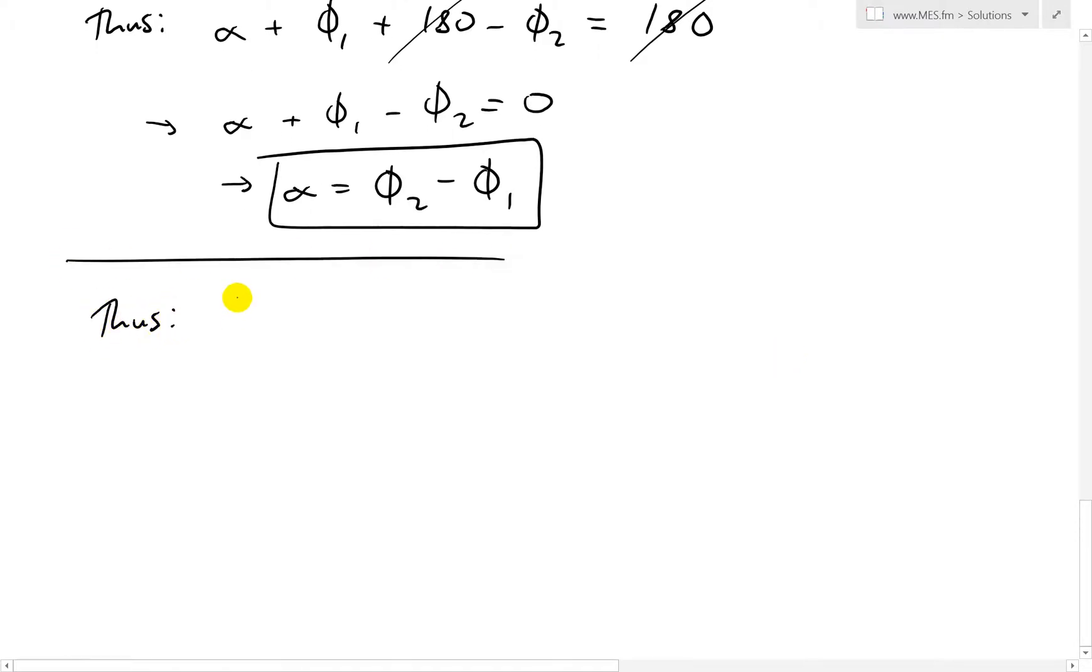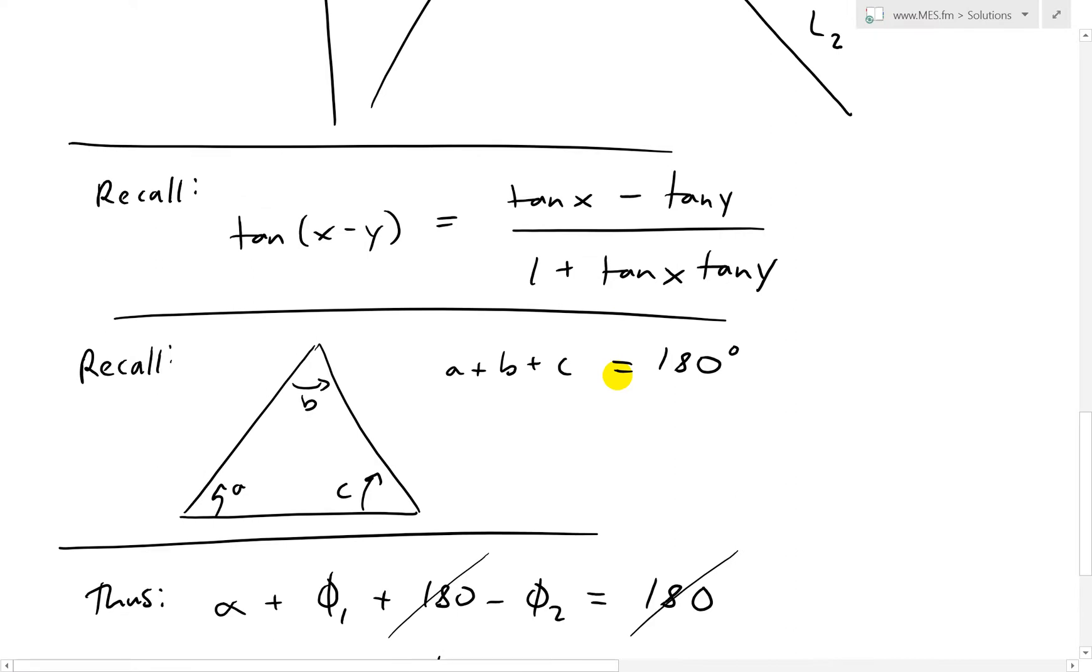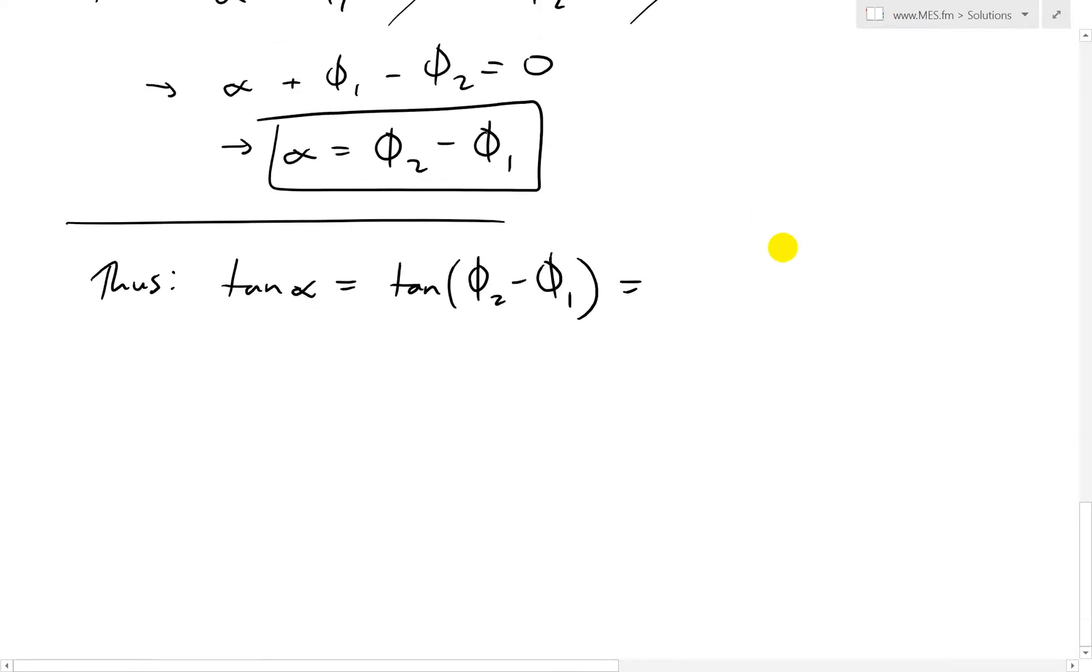Now we can apply the trig identity. Thus, we have tan alpha equals tan(phi 2 - phi 1). Using the trig identity, we have tan phi 2 minus tan phi 1 over 1 plus tan phi 2 tan phi 1.